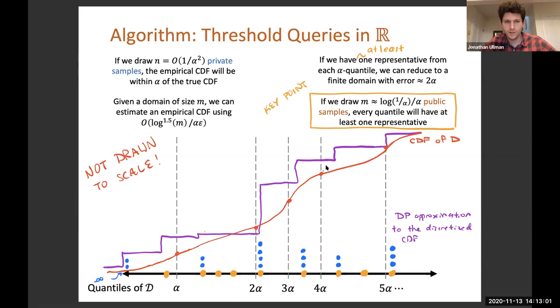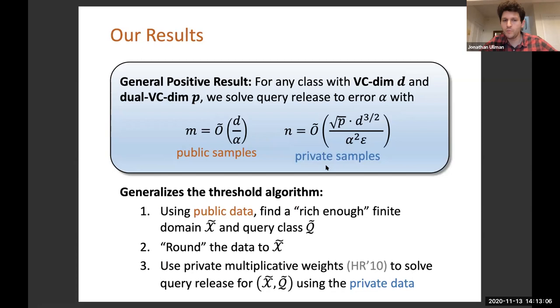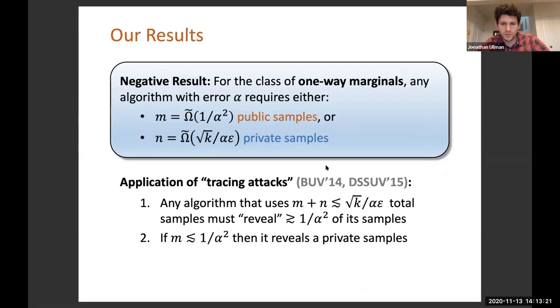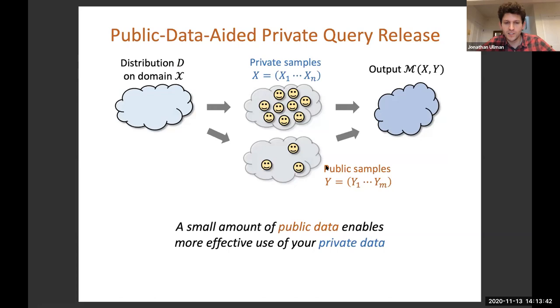I'm short on time, but our general result uses a similar idea. We use the public data to find a rich enough domain that's still finite in order to approximate the queries. Then we just use more sophisticated mechanisms for releasing statistical queries over a finite domain. Our lower bound is based on a fairly simple observation about the existing lower bounds for one-way marginals that come from work of mine with Mark Bunn and Salil Vadan. The thought I want to leave you with is that what our results show is that you can use a small amount of public data to enable more effective use of your private data. I think it's interesting to explore other types of background knowledge that we can incorporate to overcome the challenges of private data release. Thank you.